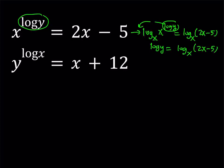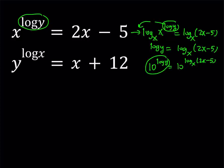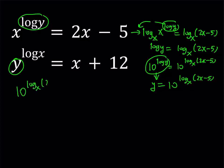Now, what we can do is replace y using that expression. We don't have y directly — we have log y. So why not raise both sides as 10 to the power? 10 to the power log y equals 10 to the power of log base x of (2x minus 5). This gives us y equals 10 to the power log base x of (2x minus 5). I can substitute that into the second equation, but you see, this kind of complicates things. I have a better method.